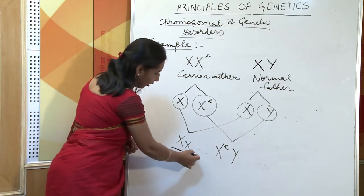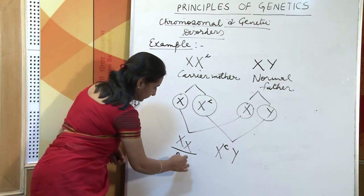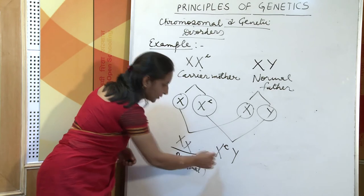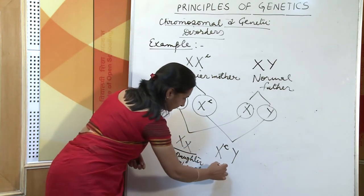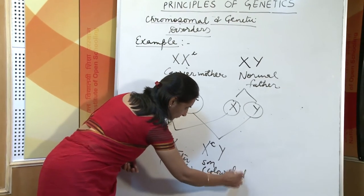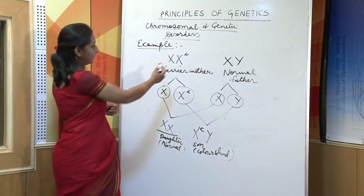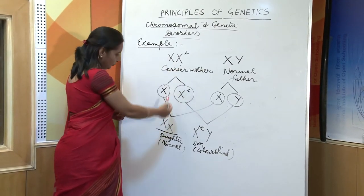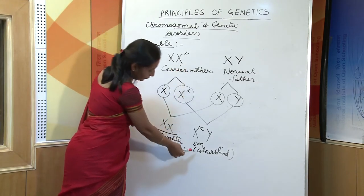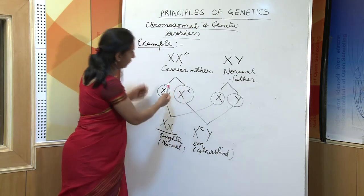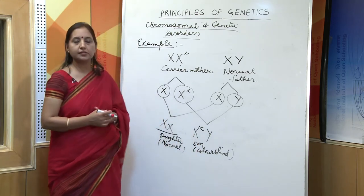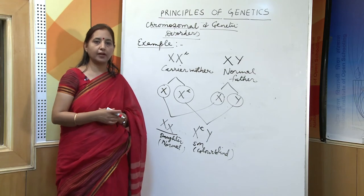We can see that if a carrier mother marries a normal father — a father who does not suffer from color blindness — the daughter is normal, whereas the son is color blind. The carrier mother transfers the X chromosome to the daughter and the defective chromosome carrying the color blindness gene to the son. Therefore, the mother is transferring the gene to the son instead of the daughter, and this kind of inheritance is called criss-cross inheritance.